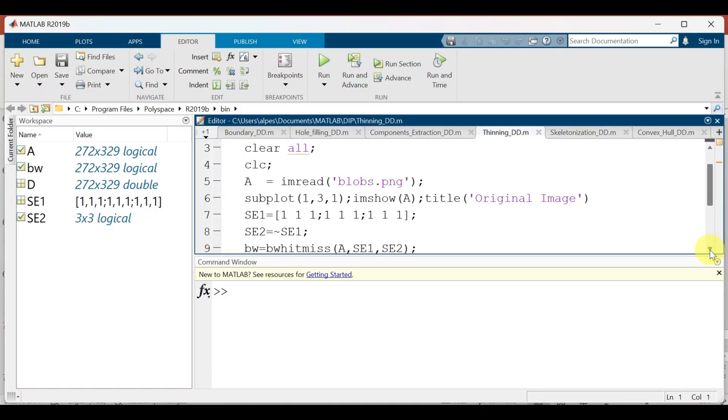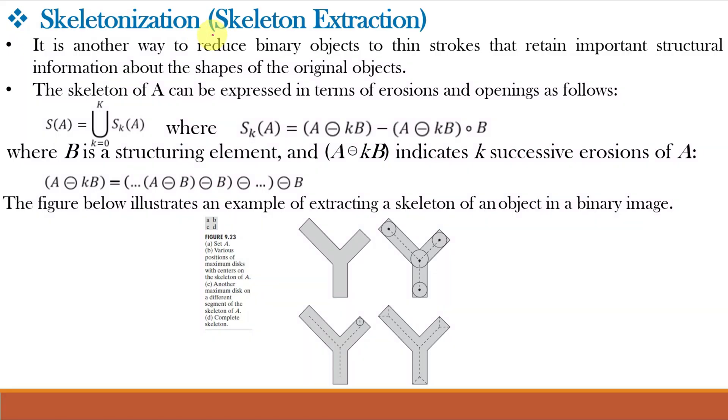Let us implement thinning in MATLAB. Next is skeletonization or skeleton extraction which is similar to thinning and it is one another way to reduce binary objects to thin strokes that retain important structural information about the shapes of original objects. So we know that skeleton is a concise representation of a shape.